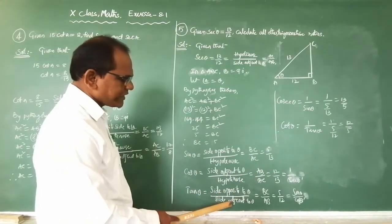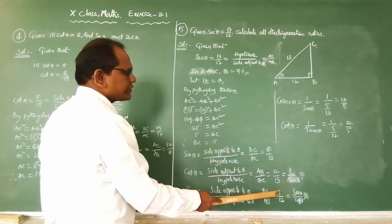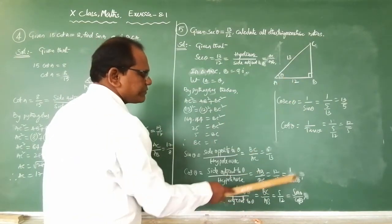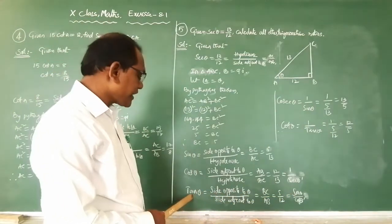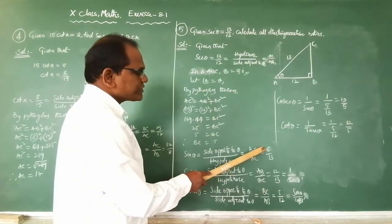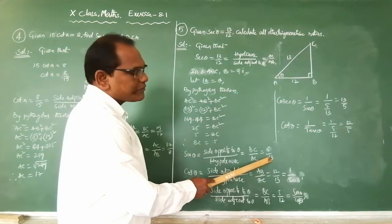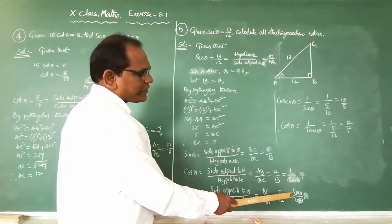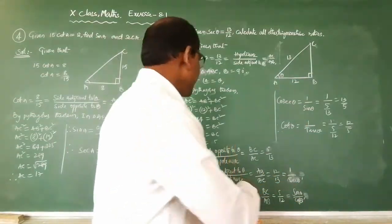Tan θ: side opposite to θ divided by side adjacent to θ. Side opposite to θ is BC equals 5, and side adjacent to θ is AB equals 12, so tan θ equals 5 by 12. We can also write tan θ as sin θ by cos θ: sin θ is 5 by 13 and cos θ is 12 by 13, the 13s cancel, giving 5 by 12. So tan θ equals 5 by 12.